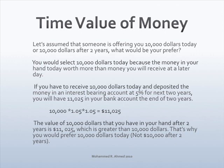If you have to receive $10,000 today and deposited the money in an interest-bearing account at 5% for the next two years, you will have $11,025 in your bank account by the end of two years. The value of $10,000 that you have in your hand after two years is $11,025, which is greater than $10,000. That's why you would prefer $10,000 today, not $10,000 after two years.